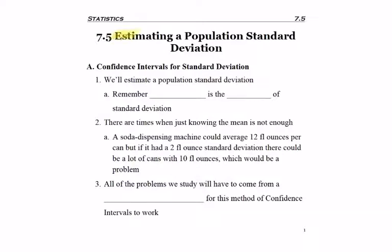Section 7.5 is estimating a population standard deviation, so ultimately remember that means we're just making confidence intervals. When you make a confidence interval, it's always for a population parameter, so for us it'll be standard deviation. Don't forget though that variance is the square of standard deviation. If you take a standard deviation and square it, you end up producing the variance, which you could make a confidence interval for, but we're just going to be focused on standard deviation.